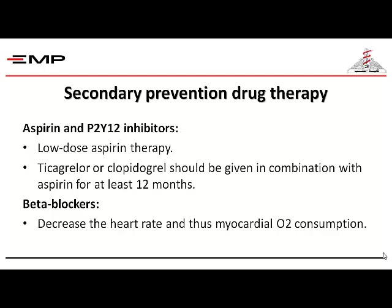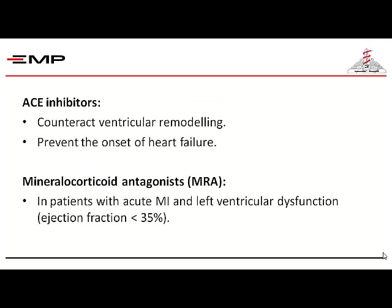Beta blockers are important in ischemic heart disease — they decrease the heart rate and myocardial oxygen consumption, thus improving symptoms. Certain beta blockers are very important in heart failure patients and for prevention of further events. If you have an impaired ejection fraction, ACE inhibitors are a cornerstone. And also, even in smaller doses, even if the left ventricle is not in failure, they counteract ventricular remodeling and help avoid ventricular failure.